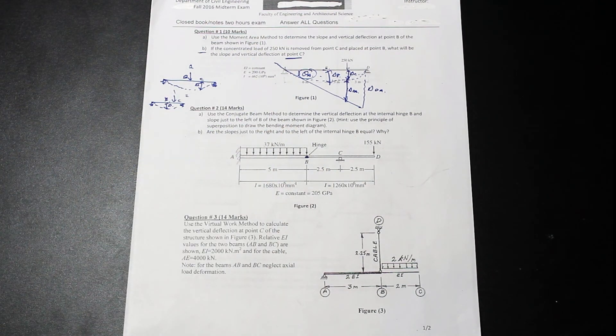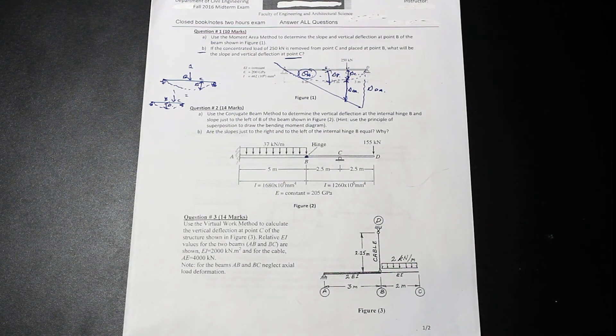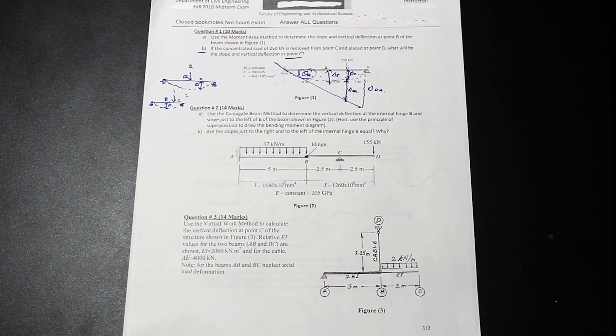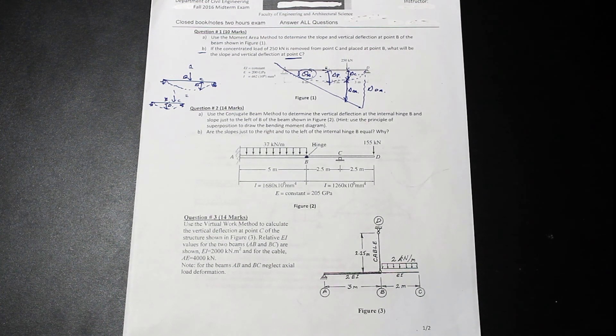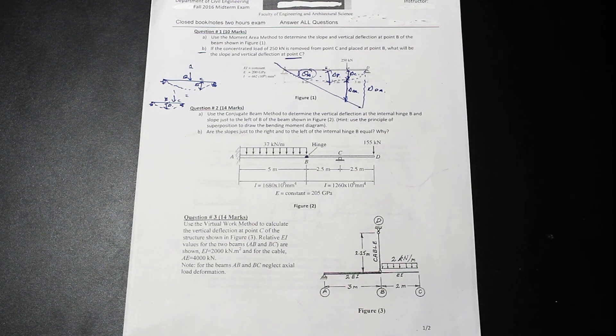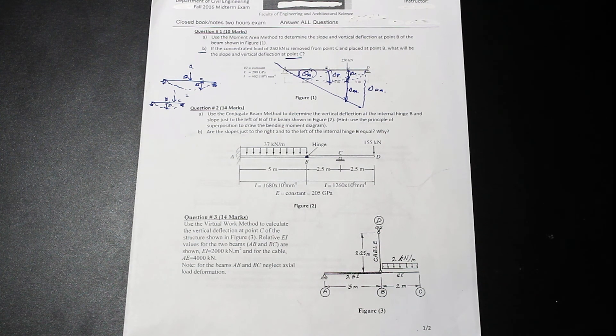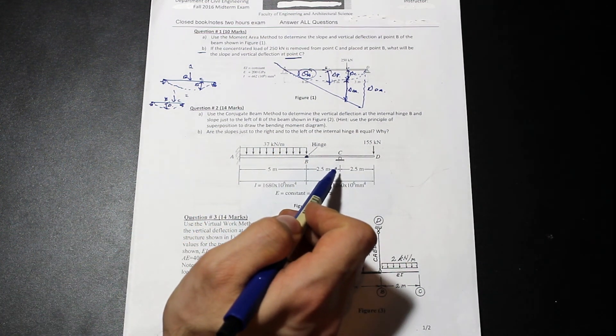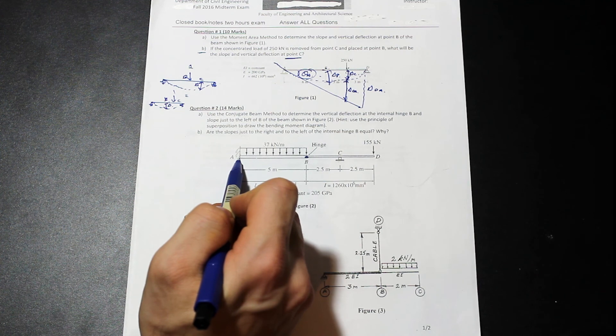And once we have the conjugate beam, we draw the M over EI diagram on the conjugate beam and the shear at any point on the conjugate beam is equal to the slope and the moment at any point in the conjugate beam is equal to the deflection. That's the idea here. So what we would do is we would change this beam into the conjugate beam and then we would load it and we would draw the M over EI diagram and we could find our slope and our deflection. The second part of this question asks, are the slopes just to the right and the left of the internal hinge equal? Why? And if you want to think about that for a second, pause the video and maybe kind of apply your understanding and your knowledge, go for an answer on that.